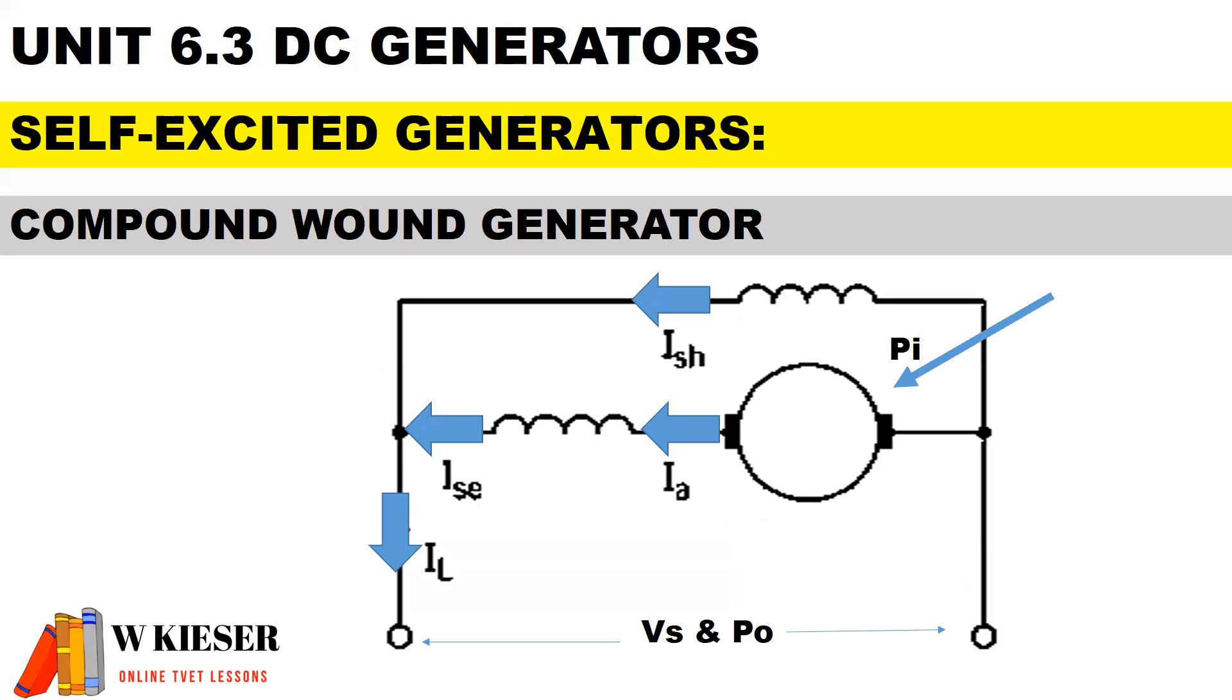We have a combination of a series winding and a shunt winding, which means the compound-wound generator uses the positive characteristics of a series and shunt generator.